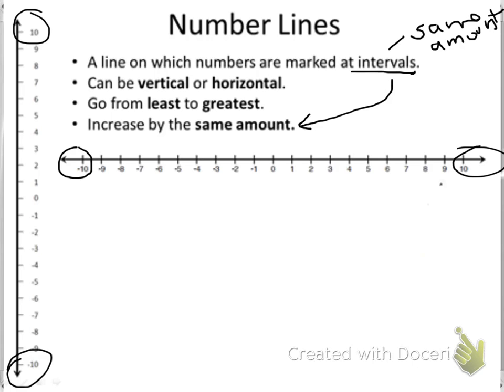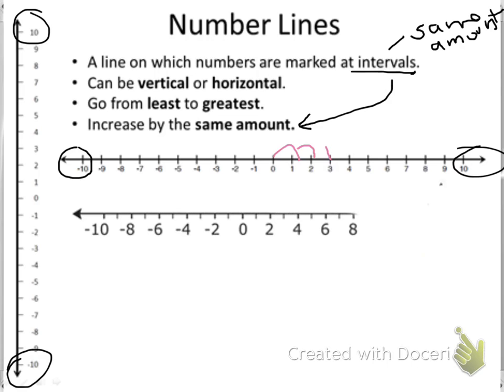These ones increase by one each time. We go from zero to one, one to two, two to three. But let's look at some different examples. Here I have a number line that instead of increasing by one, it increases by two. So you can see it starts at zero, and then it goes to two, four, six.